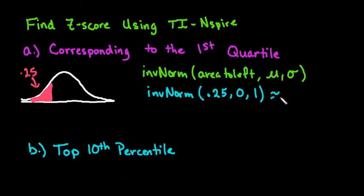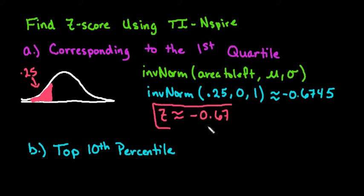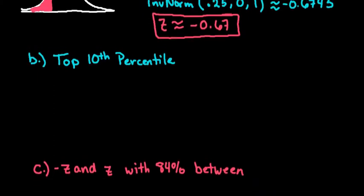So depending upon how many decimal places you need, for this one, if we round it, it would be negative 0.6745. You can either report it as negative 0.674, because if we would have rounded it before, most of the time when you're reporting the Z-score, they're just going to want two decimal places. So we would just say that this is negative 0.67. If you were using your table, that's how many decimal places. That's why normally with the Z-score, we just use two decimal places.